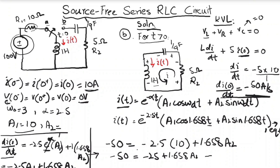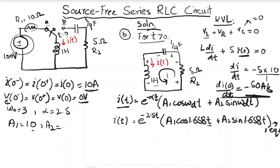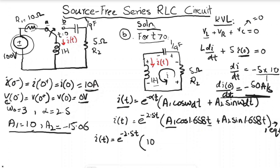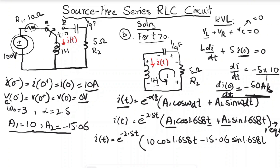Substituting a1 = 10 and a2 = -15.06 into the general equation, the final answer is: i(t) = e^(-2.5t) [10·cos(1.658t) - 15.06·sin(1.658t)] amperes, for t > 0. This is the current i(t) we were required to find.